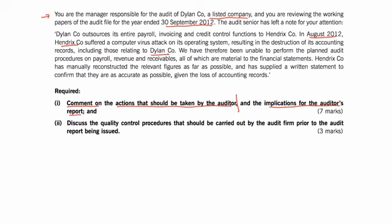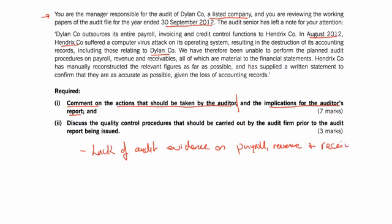Hendricks has manually reconstructed the relevant figures as far as possible, and has supplied a written statement to confirm that they are as accurate as possible given the loss of accounting records. So the issue is clear: we have a lack of audit evidence on the three things — payroll, revenue, and receivables.